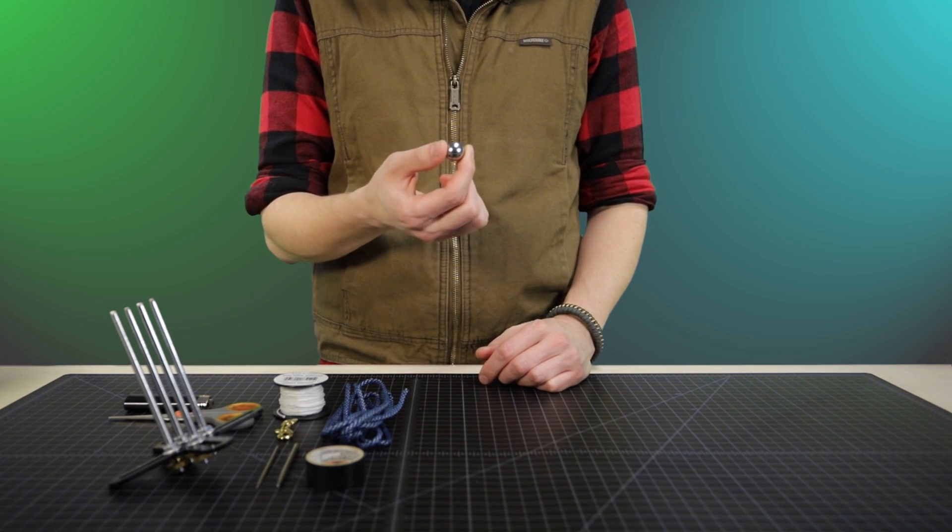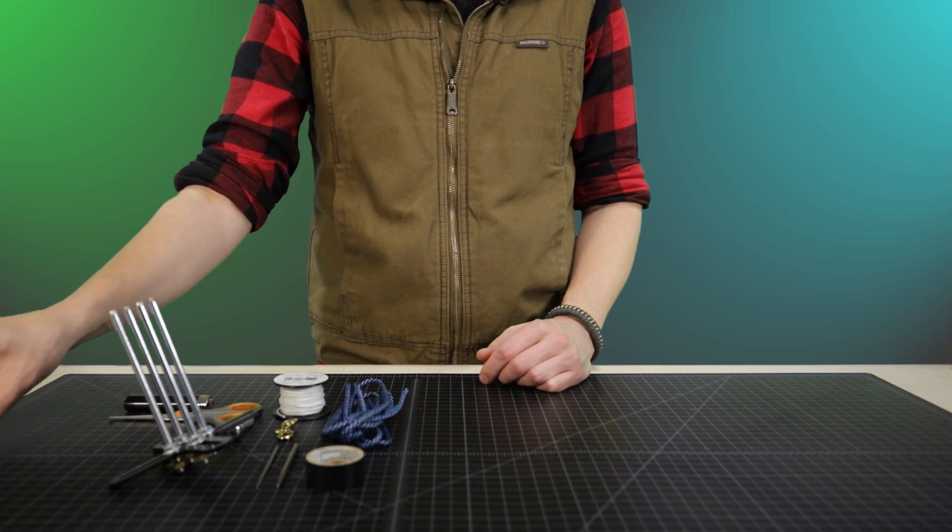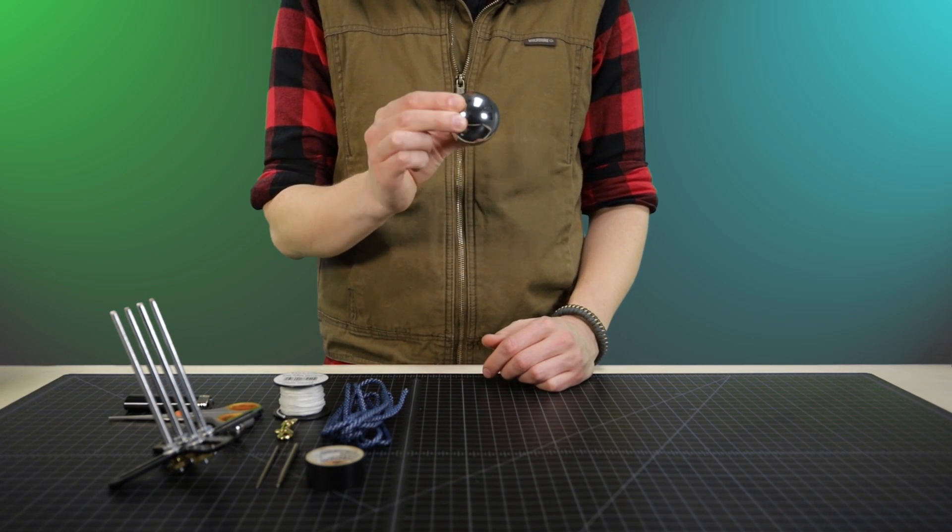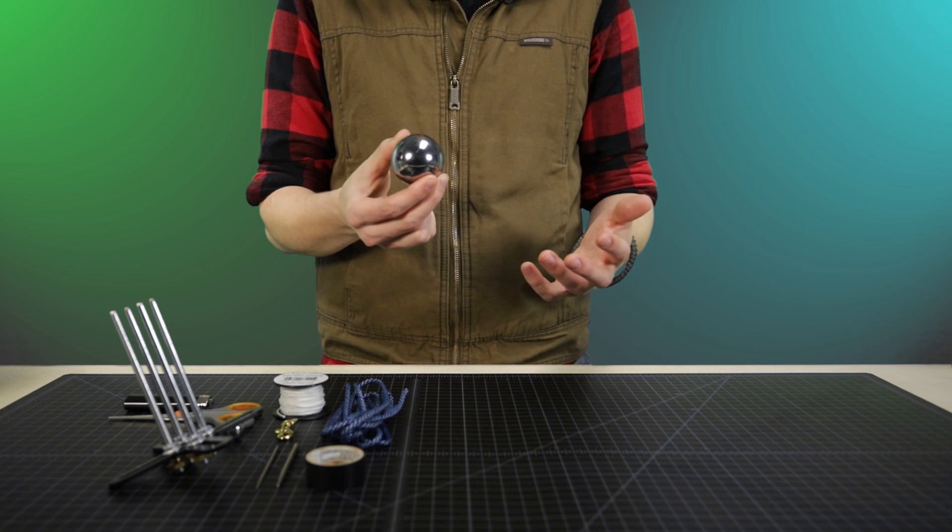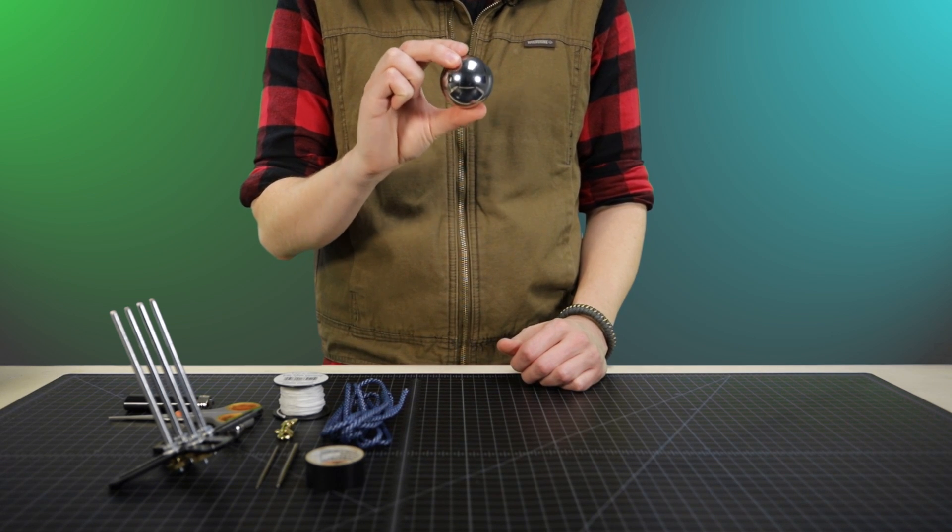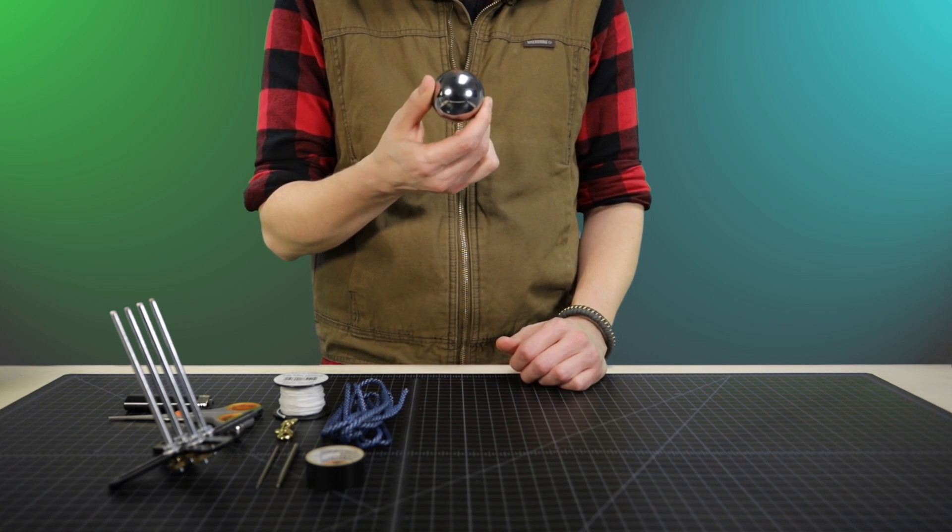So I've got here a 3 quarter inch ball bearing. In our store we've got that size all the way up to 2 inch. You don't have to use these, you can use a wooden bead or some people use a pool cue ball or other such objects.